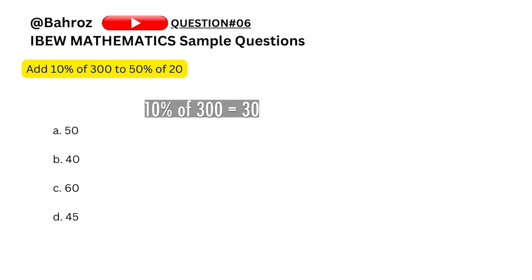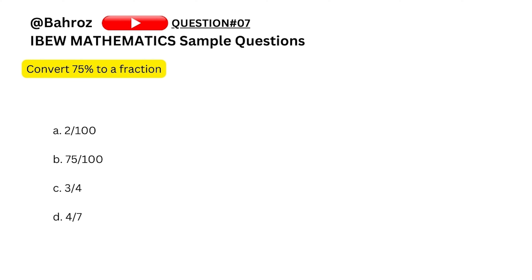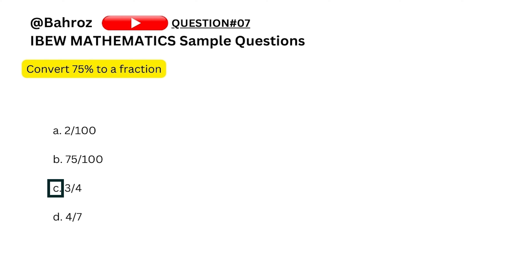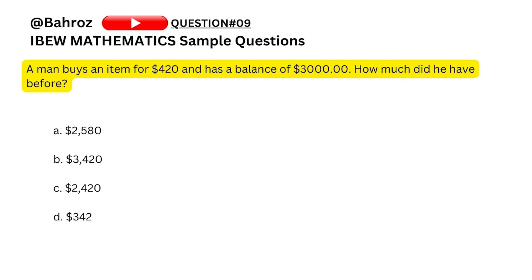Question six: add 10 percent of 300 to 50 percent of 20. Ten percent of 300 is 30, 50 percent of 20 is 10, so 30 plus 10 is 40. Question seven: convert 75 percent to a fraction. Using elimination: 75 by 100 is 75 percent yes, but 3 by 4 is also 75 percent and is the simplified version, so C — three-quarters — is our answer. Question eight: convert 90 percent to a fraction. 9 by 10 equals 90 percent, so D is our answer.